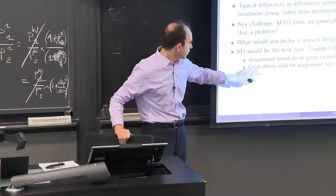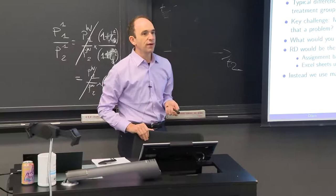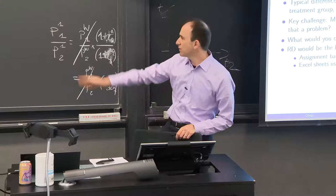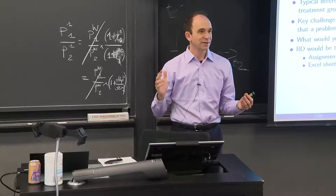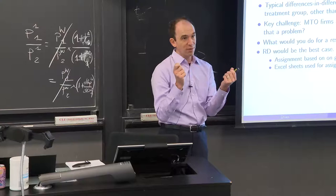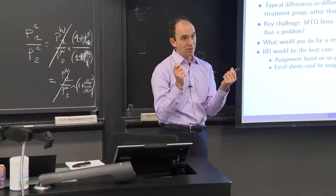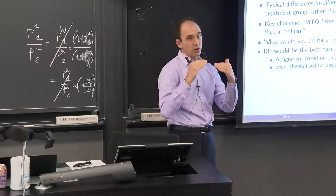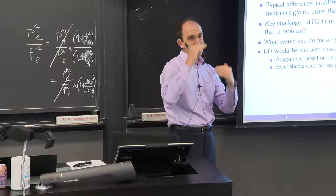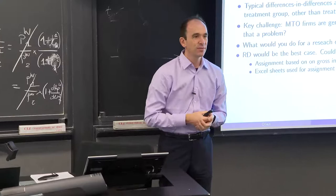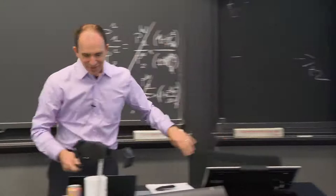So instead, we used propensity matching combined with differences-in-differences. The idea is that in the middle of the distribution, some firms happened to get treated and some didn't — that's the idea of propensity score matching. With this kind of design, at the very top everyone is treated, at the very bottom nobody is treated, but in the middle there's an intermediate range where we can compare similar firms.